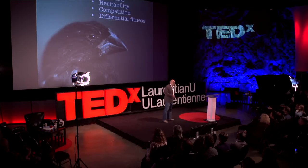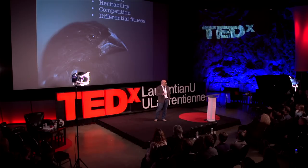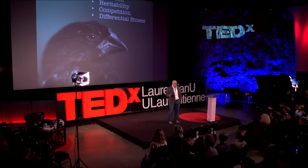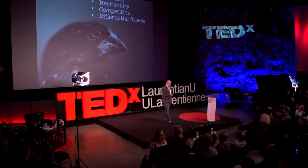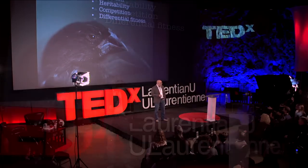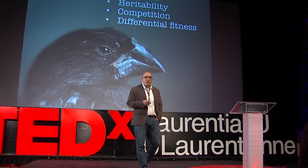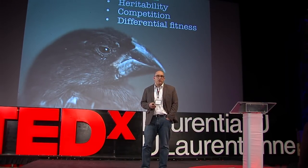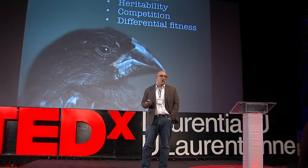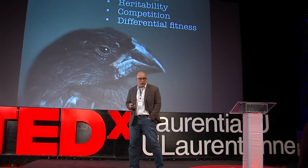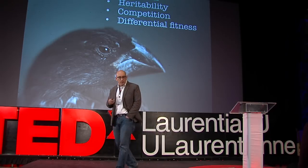There are four components of natural selection. The first is variation — the idea that there are differences among individuals. If you look at a species, there are some individuals that are large and some that are small. These differences in traits or characteristics have an underlying genetic basis, and we call that heritability.